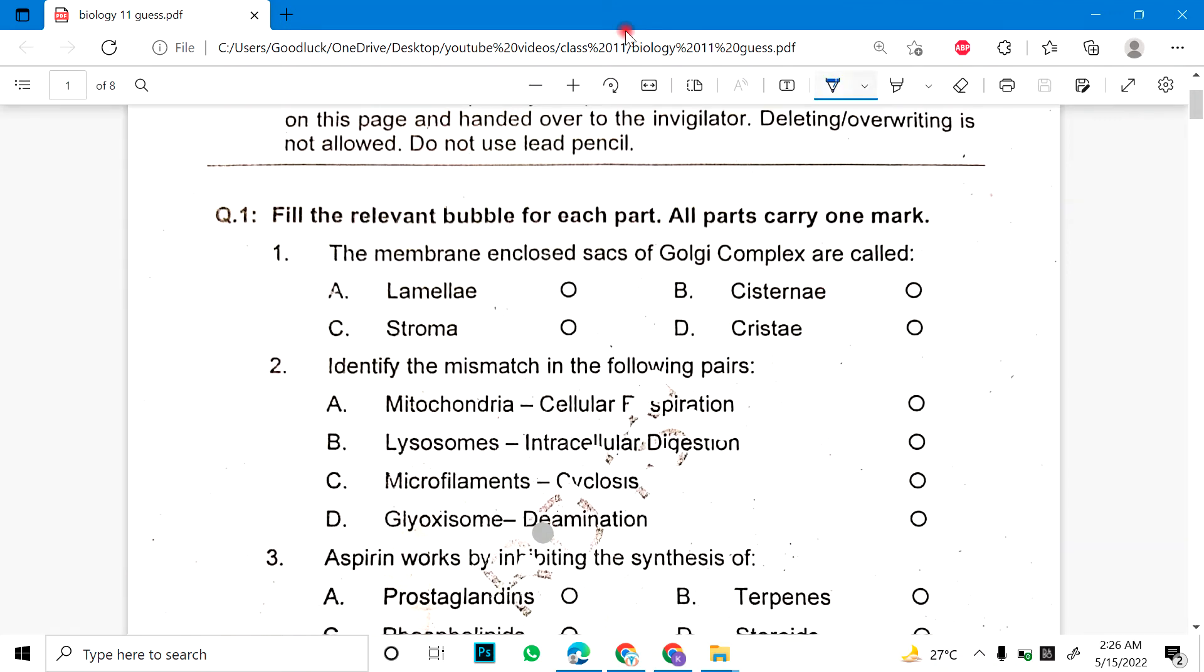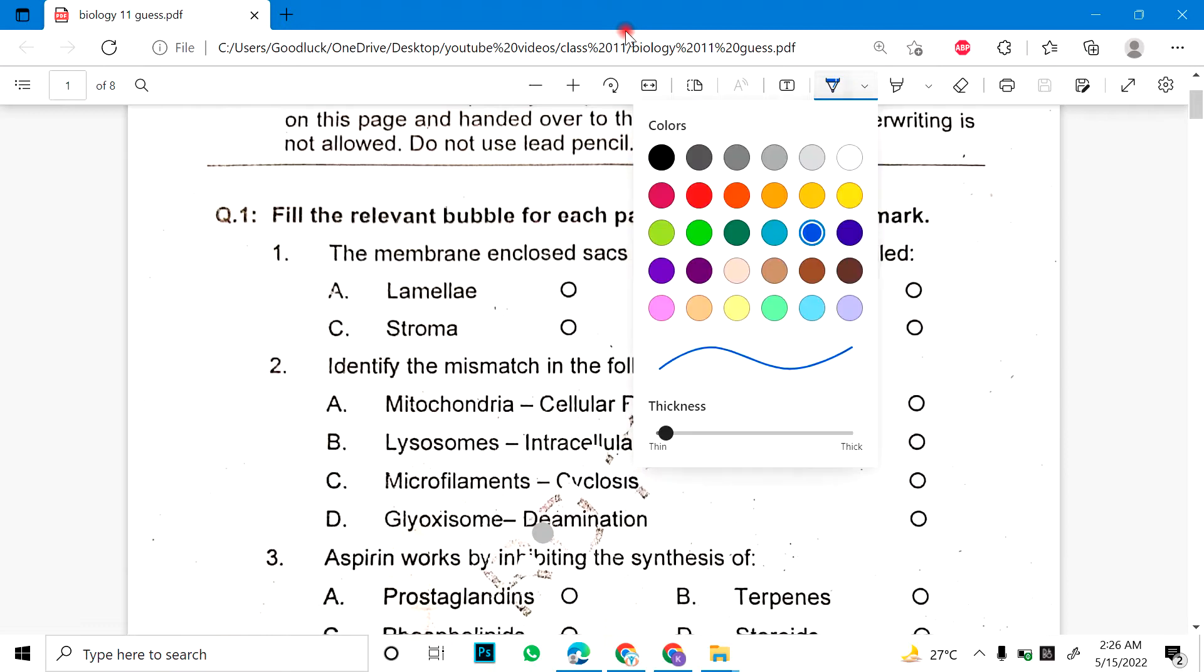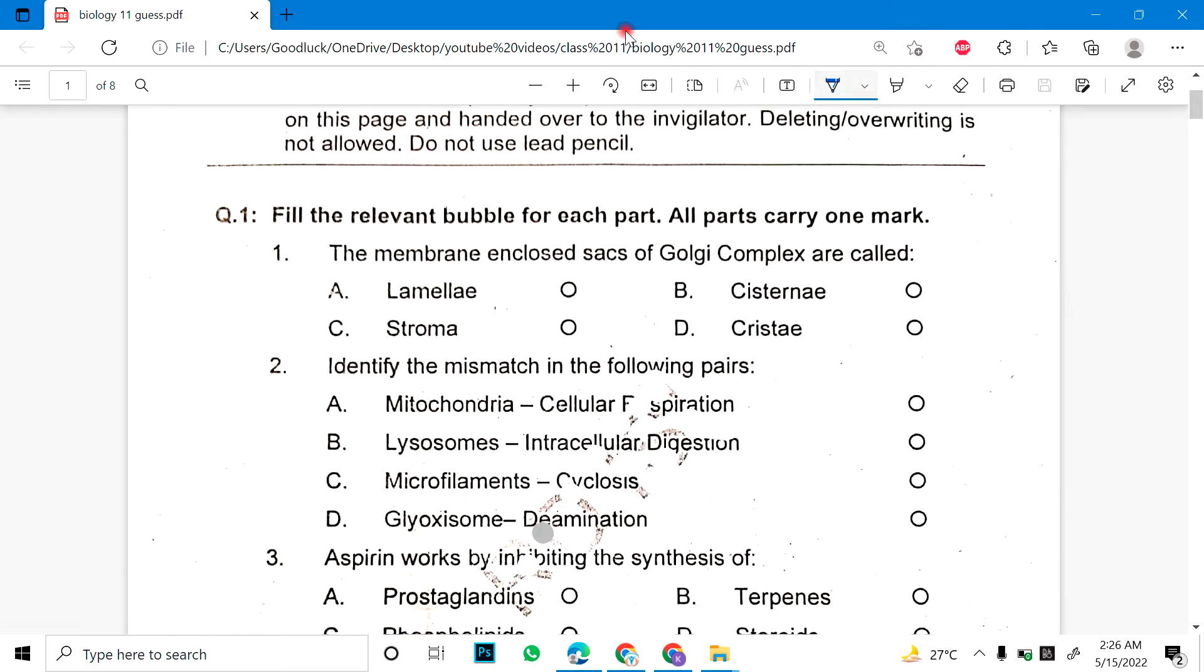We will see which MCQs are coming. Number 1: The membrane enclosed sacs of Golgi complex are called. You have 4 options. You have to see which option is correct.